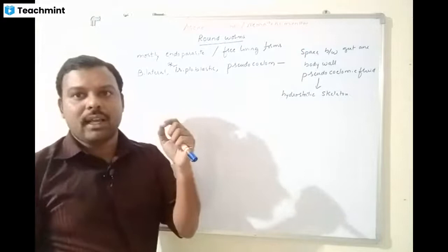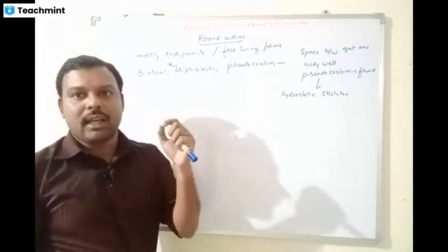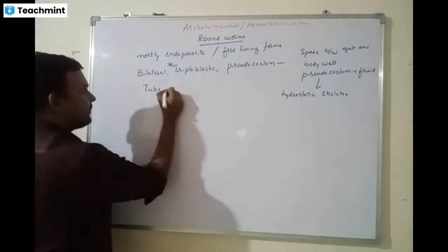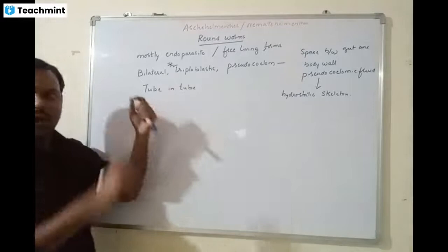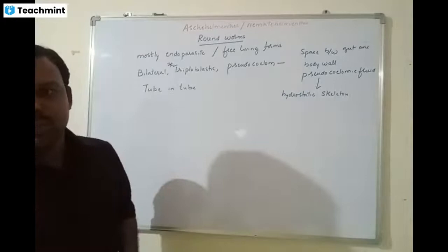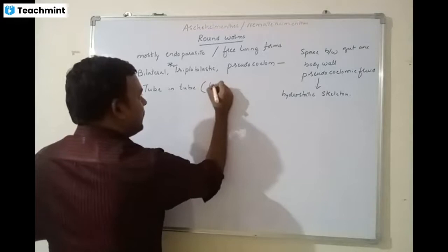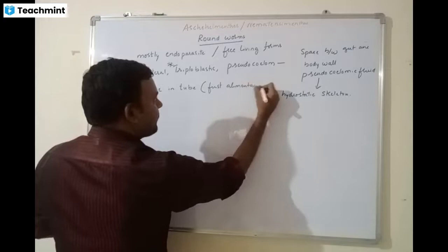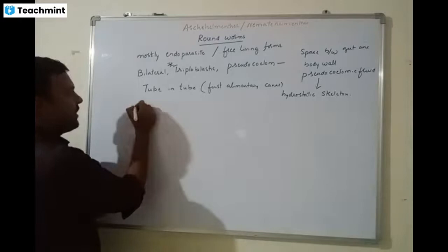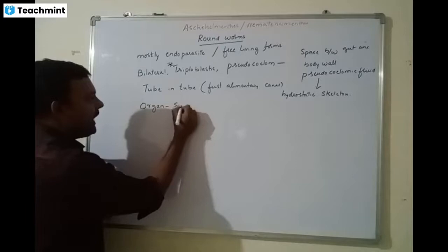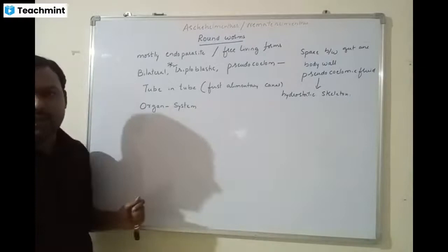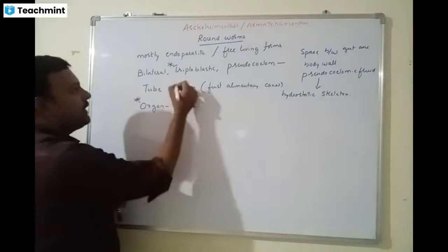For the first time we are seeing a complete alimentary canal with both a mouth and a posterior opening. That is why we call them tube-in-tube organization — the roundworm body is a tube, and inside there is another tube (the alimentary canal). Also for the first time, we are seeing organ system level of organization. Earlier in Platyhelminthes we saw only organs, but here we see organ systems.